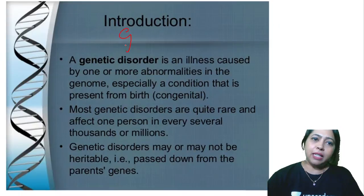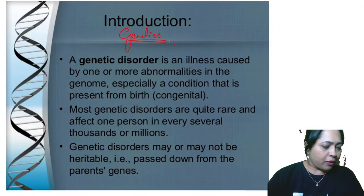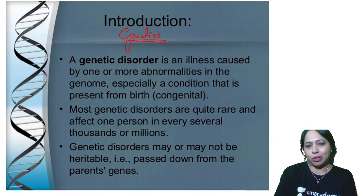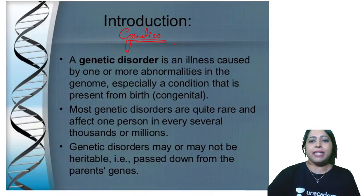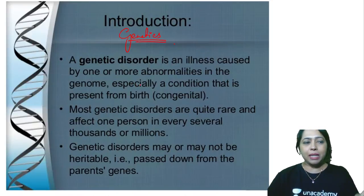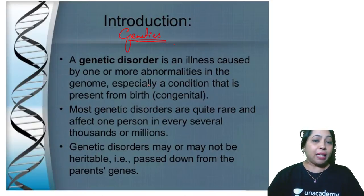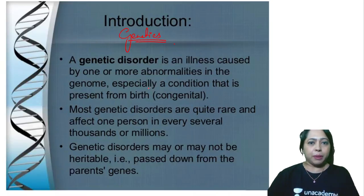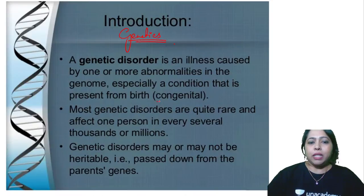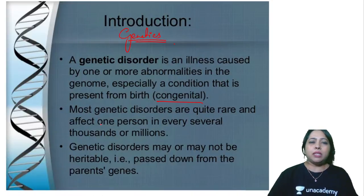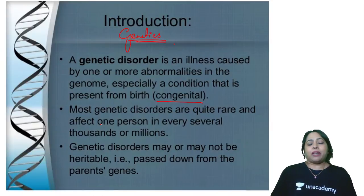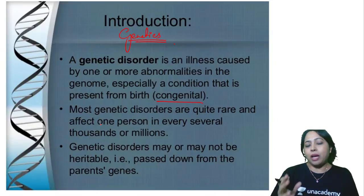Let's start with genetics now. Whatever genetics we do, first of all we should know what is a genetic disorder — what is the disorder and why it happens. It's an illness caused by one or more abnormalities. You cannot simply say with one single abnormality that it is a genetic disorder; there should be a set of disorders you can list. It is a condition present from birth, which you call genetic — congenital most of the time. Most genetic disorders are very, very rare and they affect only one in several million people.